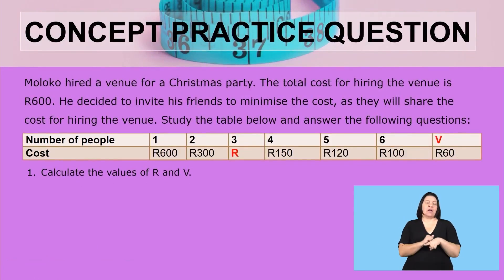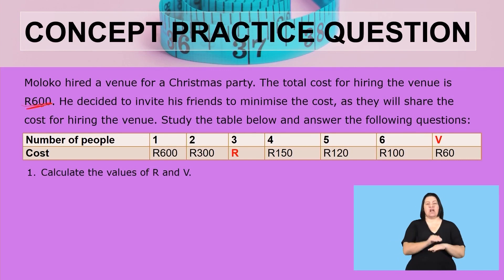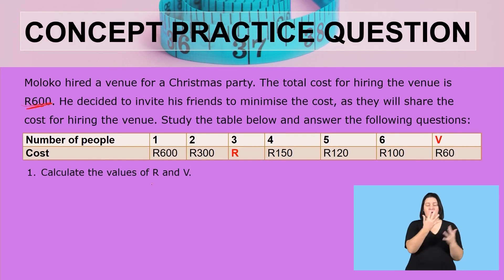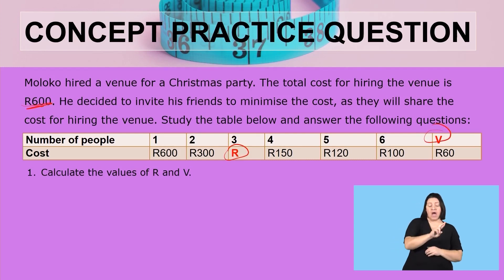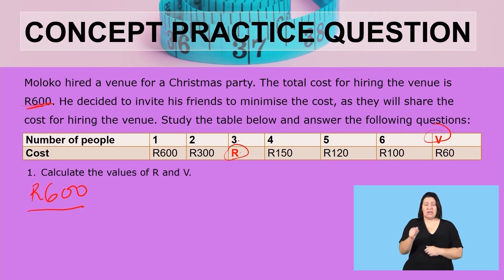Now let us practice what you have just learned. Moloko hired a venue for a Christmas party. The total cost for hiring the venue is 600 rent. He decided to invite his friends to minimize the cost as they will share the cost for hiring the venue. The first question is to calculate the values of R and V. R is the cost for three people.